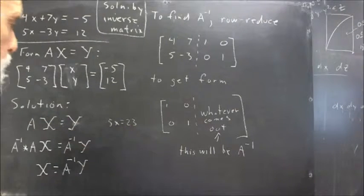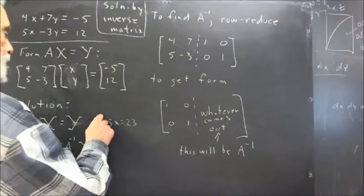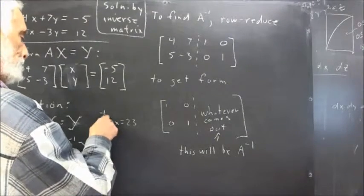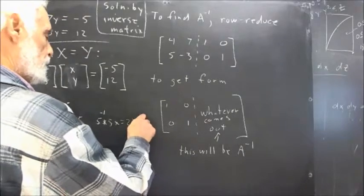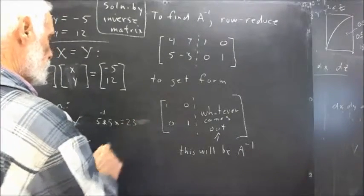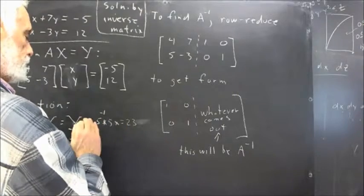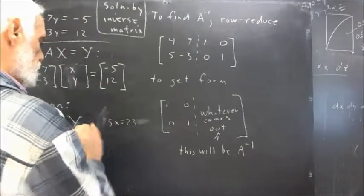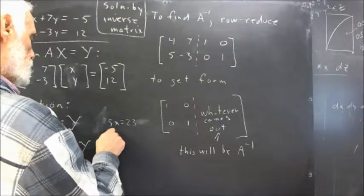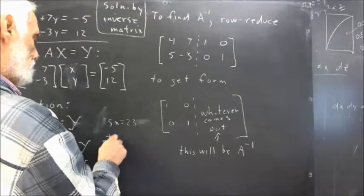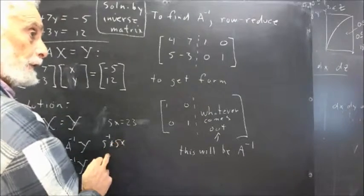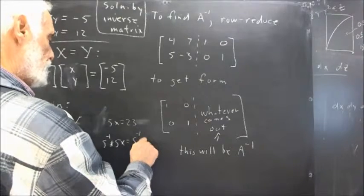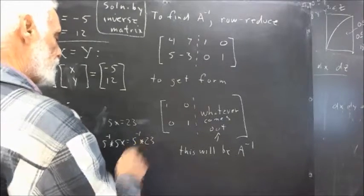However, to solve this equation, we can also multiply both sides by 5 to the negative 1. Now, I've got to be a little bit careful here. As a matter of fact, I don't want to do that in this step. What I want to do is say we can multiply this on both sides by 5 to the negative 1. So, we have 5 to the negative 1 times 5X equals 5 to the negative 1 times 23.